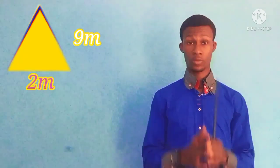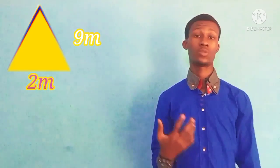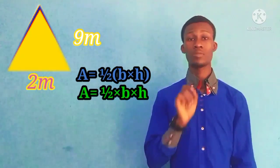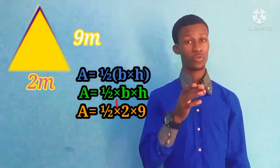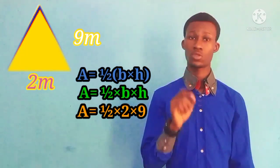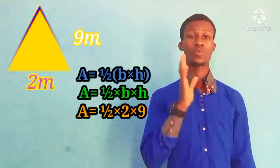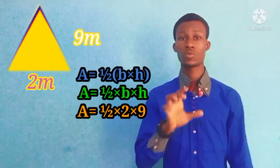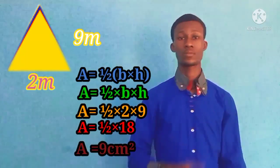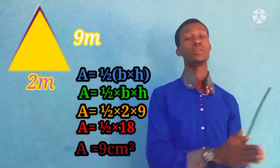For another example where the base is 2 meters and the height is 9 meters: the formula is ½ × base × height. The base is 2 (the shorter, bottom side) and the height is 9. So 2 times 9 is 18, and 18 divided by 2 is 9. Therefore our result is simply 9 cm squared.